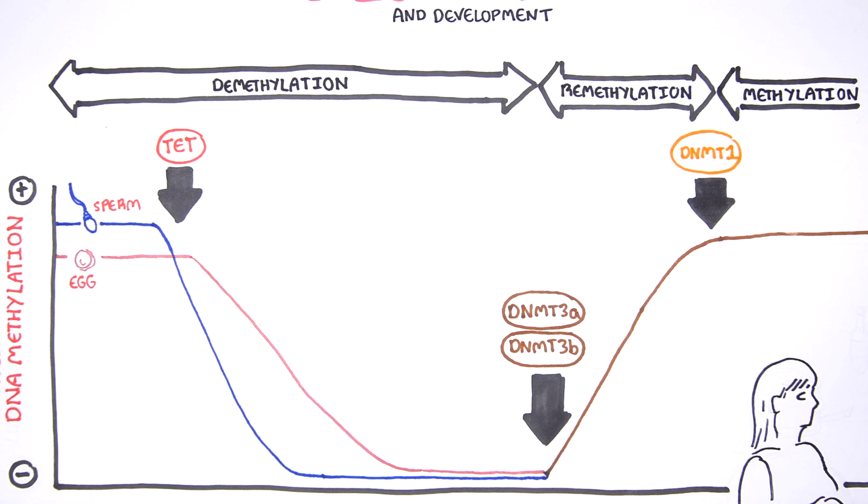DNA methylation plays an important role in human health and has been associated with a growing number of diseases including cancer, imprinting disorders, and repeat instability diseases.